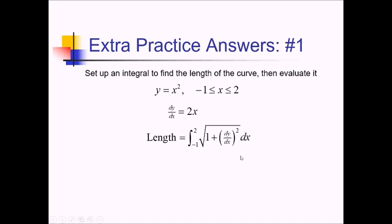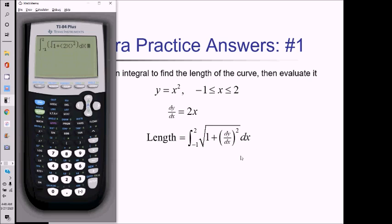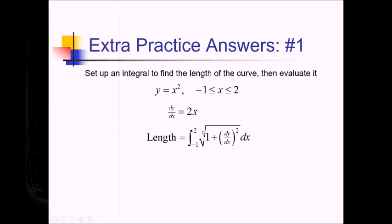So let's do this on the calculator now. Here's what this looks like on the calculator. I've got my integral. Make sure you put that 2x in parentheses before squaring it. Press Enter, and that comes out to about 6.126.